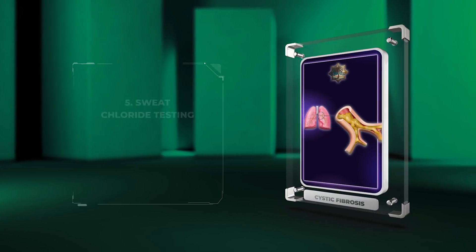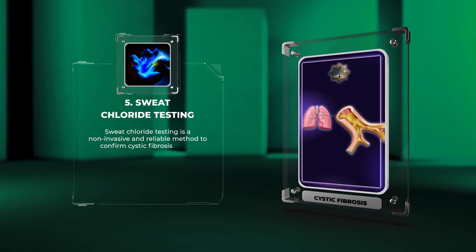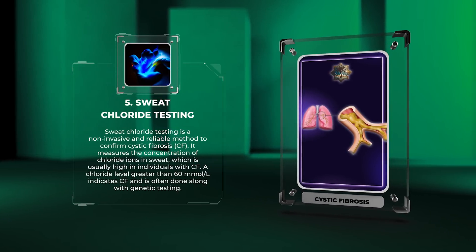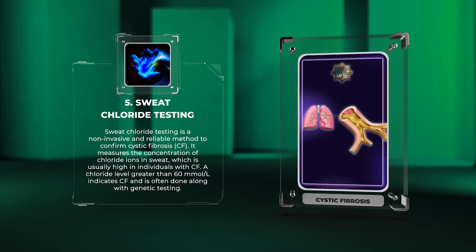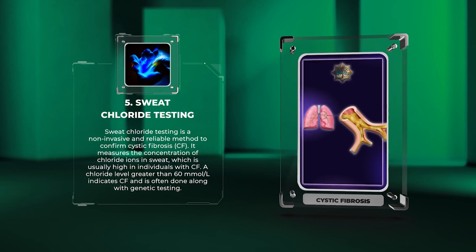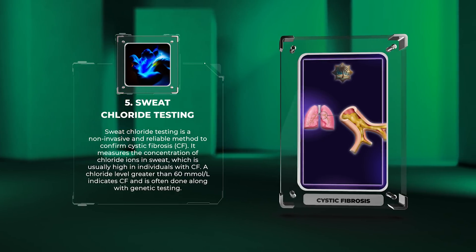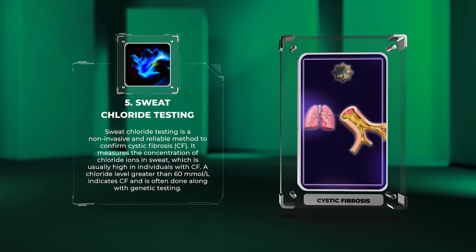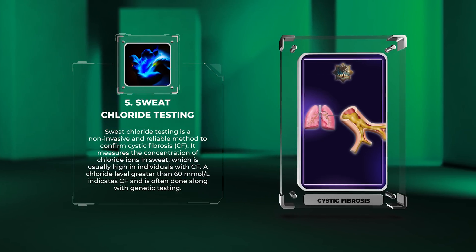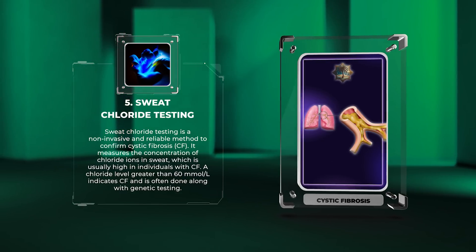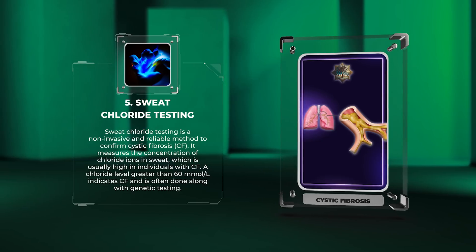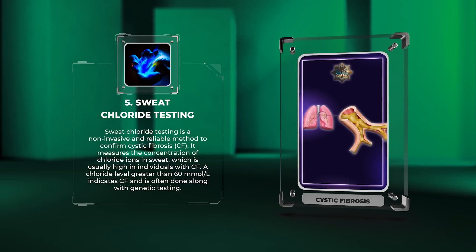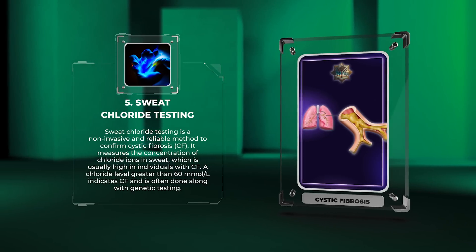Sweat chloride testing is a non-invasive and reliable method to confirm cystic fibrosis. It measures the concentration of chloride ions in sweat, which is usually high in individuals with CF. A chloride level greater than 60 mmol/L indicates CF and is often done along with genetic testing.